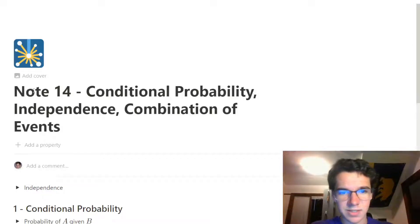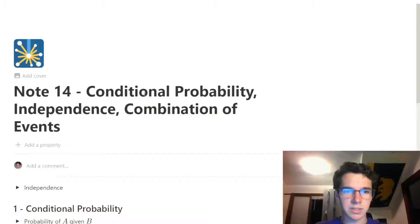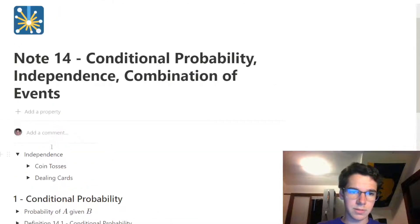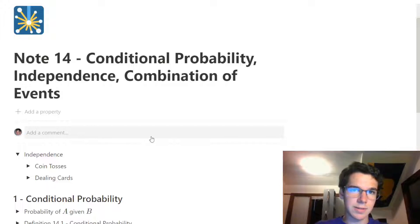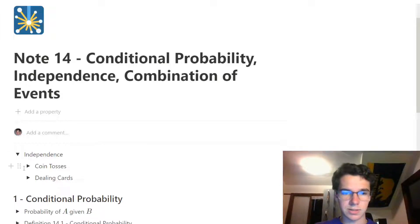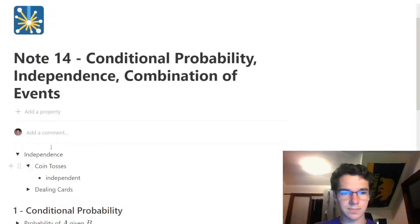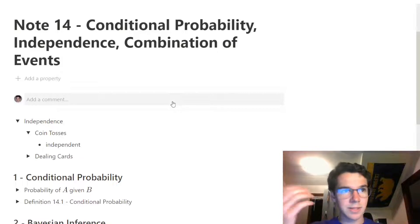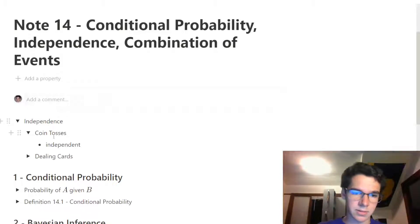This is Note 14 from CS70. This note is all about conditional probability, independence, and the combination of events. Briefly, what is independence? The easiest example to think of would be coin tosses. You flip one coin, there's a 50% chance you'll land on heads. You flip the same coin a second time, still a 50% chance that you'll land on heads.